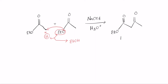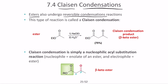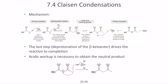The resulting product is a ketone and an ester, where the ketone is present on the beta carbon — we call this a beta-keto ester. This reaction is called the Claisen condensation reaction. It is simply a nucleophilic acyl substitution reaction where the nucleophile is the enolate of the ester and the electrophile is the ester itself.